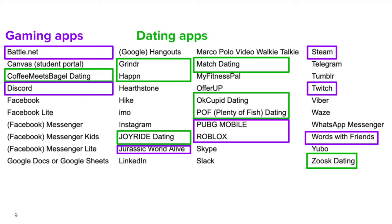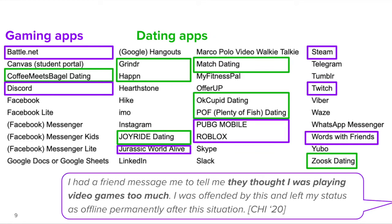Several of these apps are related to gaming or entertainment. In the cases identified by Buchenstein et al. where someone could see people coming online during work hours, maybe it would be especially damning if they were playing games during work. In our own follow-up work from CHI, one participant noted that they were confronted about their video game habits. They said, 'I had a friend message me to tell me they thought I was playing video games too much. I was offended and left my status as offline permanently.'